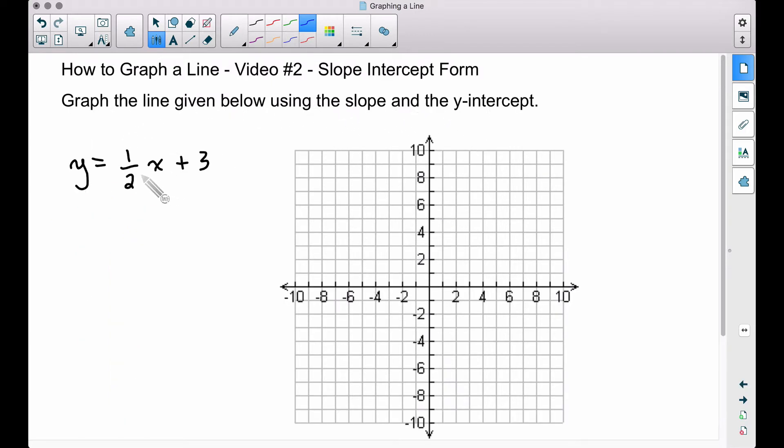Graph the line given below using the slope and the y-intercept. We have y equals one-half x plus three. The equation of this line is given to us in slope-intercept form. Slope-intercept form is y equals mx plus b. The number in front of x, the coefficient of x, is called your slope, the letter m. The b is your y-intercept.